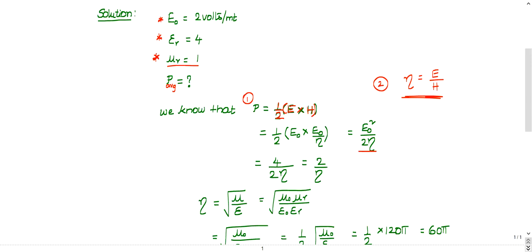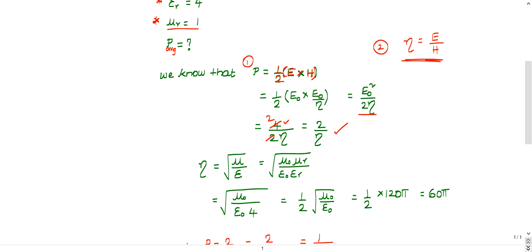E is given as E₀ is given as 2. E square will be 4. 2η. If you cancel this 2, you are going to get 2 by η. Time average power you have got it as 2 by η.